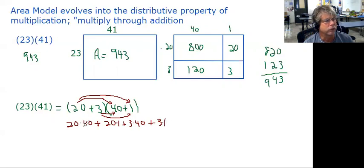So if we do the math, 20 times 40 would be 800. 20 times 1 would be 20. 3 times 40 is 120. And then 3 times 1 would be 3. So see how you have this again?